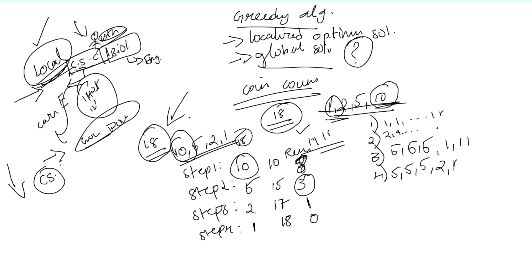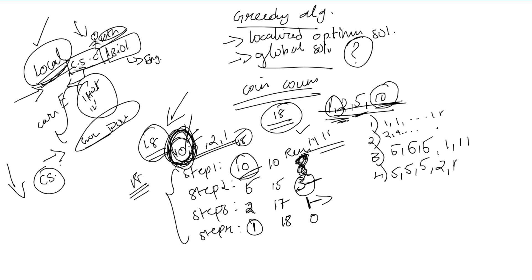So first we add the remaining balance step by step: 10 rupees as the largest coin, remaining balance 8; then 5 rupees, remaining balance 3; then 2 rupees, remaining balance 1; then 1 rupee, remaining balance 0. If you have a localized optimum solution, you pick the best option each step. This is a greedy algorithm logic, and in this scenario, it leads to a globalized optimum solution.